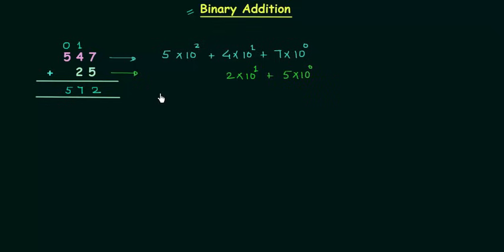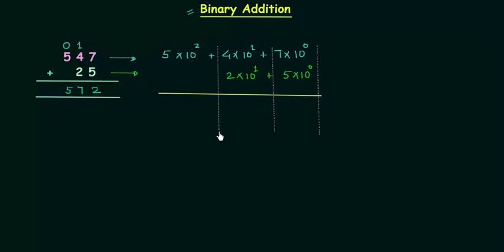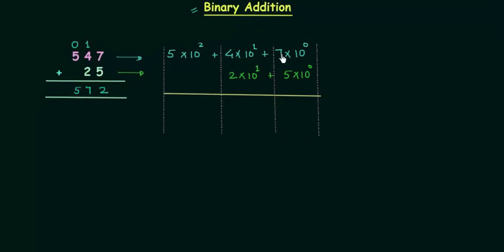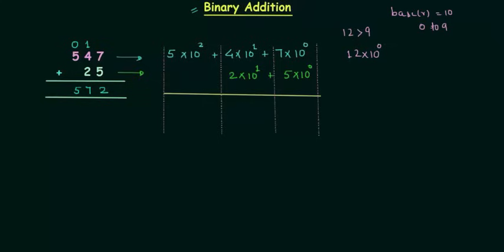Again we will try to add them. I will make three columns. The first column will have weight equal to 10 raised to power 0, the second column has weight 10 raised to power 1, and the third column has weight 10 raised to power 2. Now, 7 plus 5 is 12, multiplied by 10 raised to power 0. But 12 is not a decimal number because the base is 10 and we have digits 0 to 9, and 12 is greater than 9.